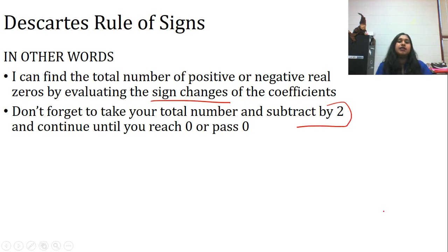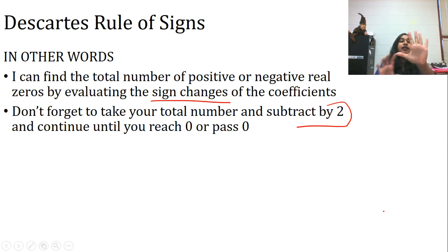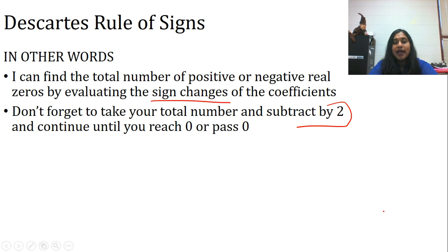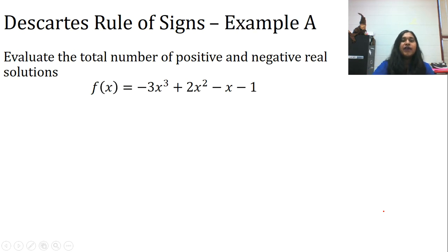What does all this mean? It means if I end up with five possible positive or negative real zeros, I'm also going to say that I have three — because I subtracted two possible real zeros — and also one, because I subtracted two again. You will always subtract by two until you reach zero or pass zero. So let's see what that looks like with a function and evaluate the potential positive and negative solutions.